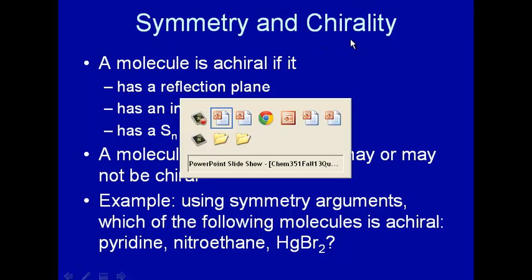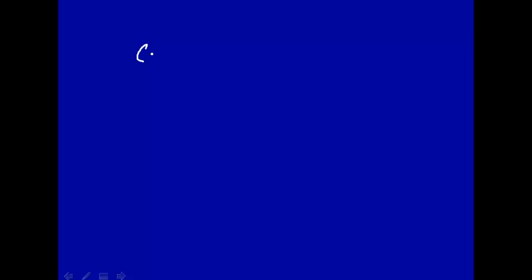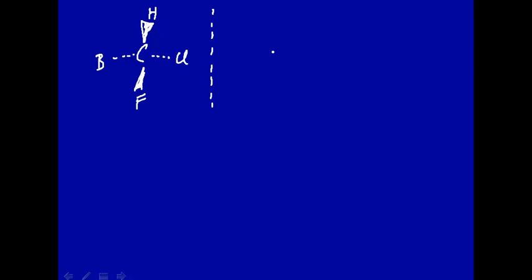Just to refresh our collective memories about what chirality is: if you have a carbon that's bound to four different things — let's try to draw this in 3D — going into the plane, using hydrogen, chlorine, fluorine, and bromine.